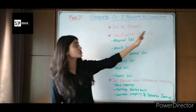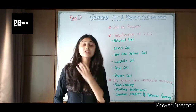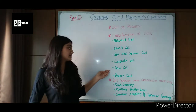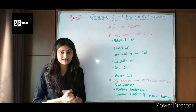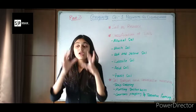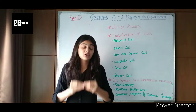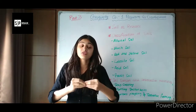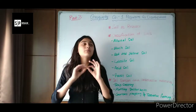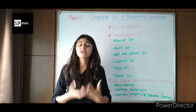Now comes the classification of soil. Just as we studied the classification of resources, there is also a classification of soil. There are six kinds of soils present in India. The first is alluvial soil. In the northern plains, the soil made due to river depositions on river banks is known as alluvial soil. This is the most fertile soil and can be seen near any river bank.